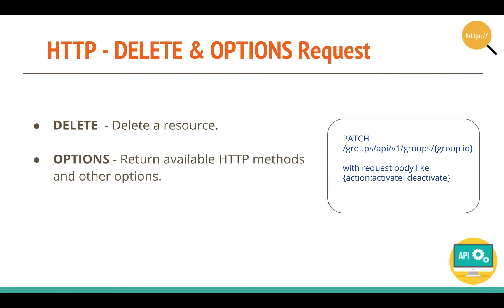A few other methods: DELETE is as the name suggests — it's used for deleting a resource. OPTIONS is used to make an options request to a particular server, and the server replies telling you what HTTP methods it supports. For example, if the server says it only supports GET and POST, you cannot make a DELETE or PUT request to it.